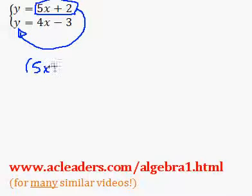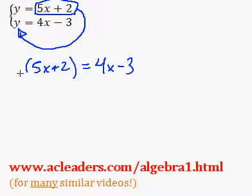So we get 5x plus 2 is equal to 4x minus 3, and we can break the brackets in this case because there's nothing surrounding them.